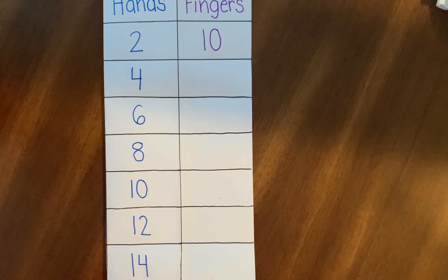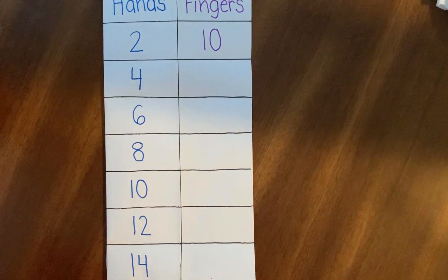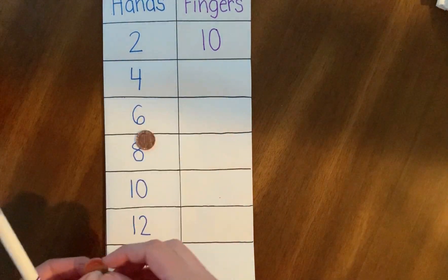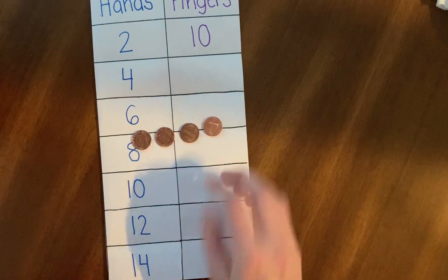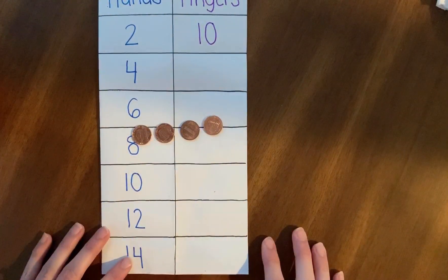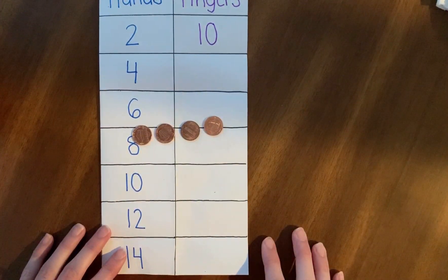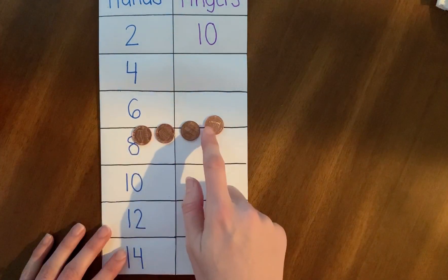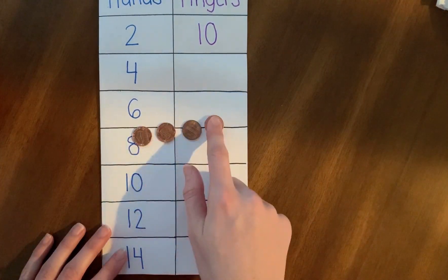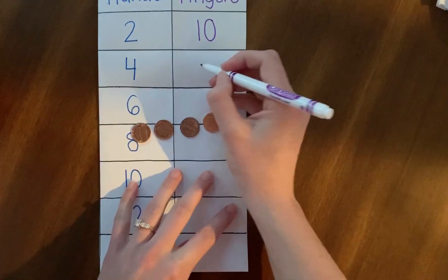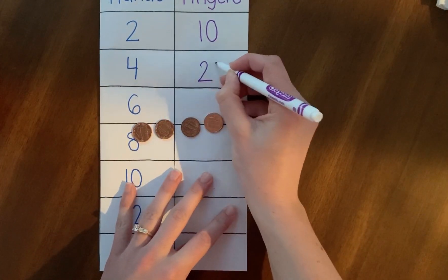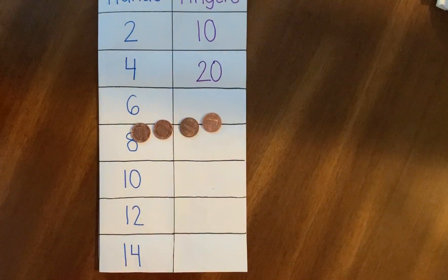What about four hands? I'm going to get some pennies to help me out, because when we're skip counting, it helps to count on tools like this. Four hands, five fingers on each — five, 10, 15, 20. Four hands: 20 fingers.